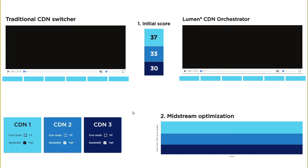Bear in mind that once the CDN is chosen with this switcher, the player will stay on that CDN for the entire session. The CDN scores you see in the middle are returned by the multi-CDN API. They are on a 1 to 100 scale and are obtained by weighting the different metrics that you may want to use.